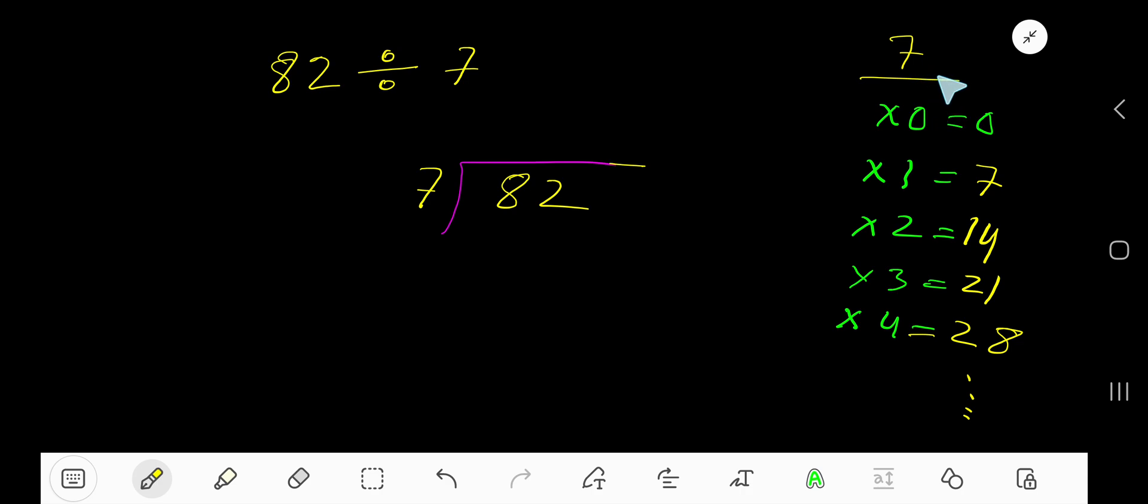Actually, to find out the multiplication table of 7 easily, just add 7 with the previous step. 0 plus 7 is 7, 7 plus 7 is 14, 14 plus 7 is 21, 21 plus 7 is 28. This is the easy way using addition.